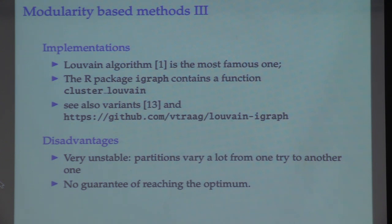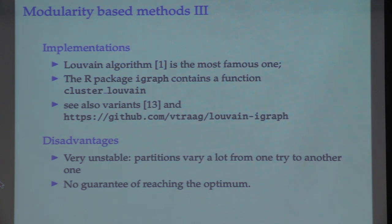The Louvain algorithm is the most famous approach to optimize this quantity, and it's only a heuristic — it doesn't claim to find the true optimal maximum. In the R package igraph there is a function implementing the Louvain algorithm you can test. There are also variants that are supposed to be faster. As already noted, it's very unstable: partitions vary a lot from one run to another, and you have no guarantee of reaching the optimal value.